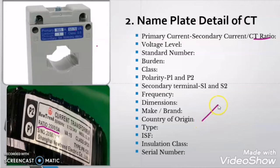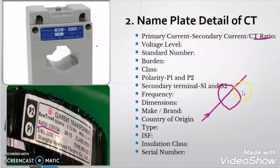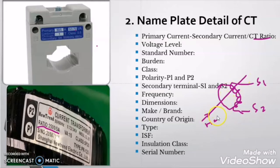As I told you, CT has only the secondary winding and the primary winding of the CT is that conductor whose current needs to be measured. So this is our CT and this is the conductor which is passing through the window of the CT. Here we have some secondary windings on the core of the CT and these are our terminals of the CT, that is S1 and S2. So here the primary winding turn is 1 because there is only one conductor, and suppose the turns in the secondary winding is 100.